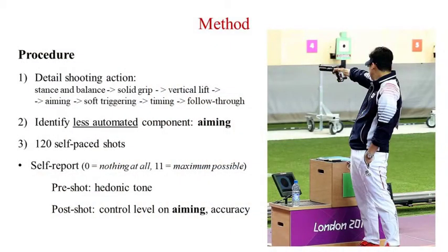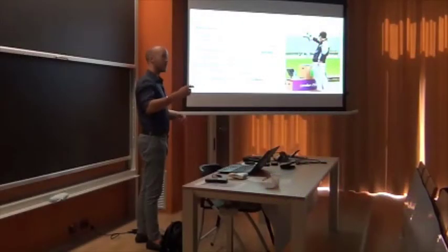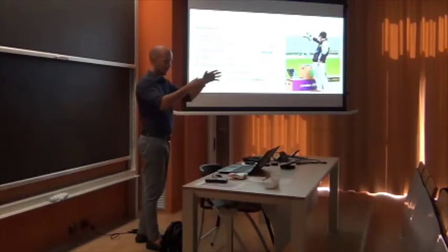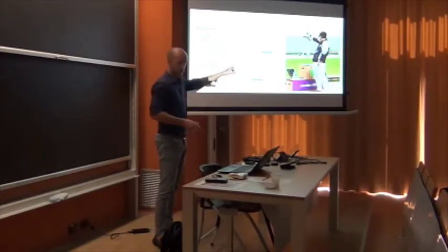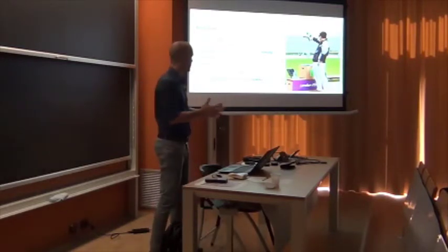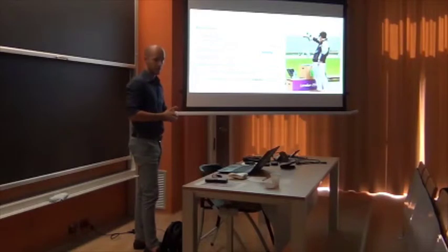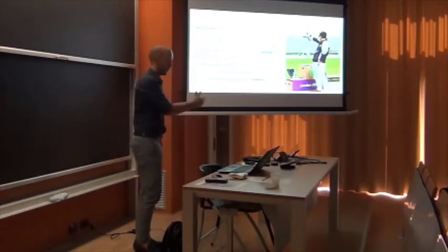He was also asked to identify his last automatic component, so they said, when you're under pressure, on what component of this do you focus more? So he said, okay, I focus on aiming. And they said, you will now perform 120 shots, which is like standard when you're training. And for each shot, before you start, you have to tell us what is your hedonic tone, how do you feel on a scale from one to ten. It was like how activated you are in that moment, to see if the baseline is the same for all four conditions. And after each shot, he was asked to tell them their control level in that component, the aiming one, the one in which he has to exert more control when he's under pressure, and also how accurate he felt the shot was. And then he was able to turn the monitor on and look at his performance.